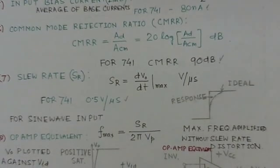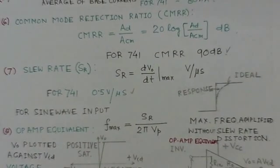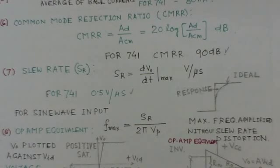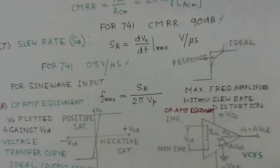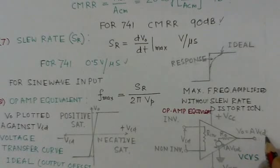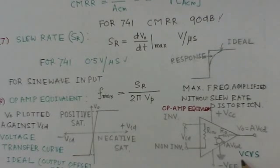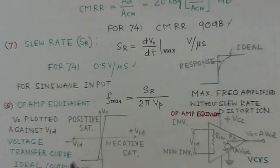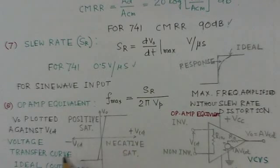The operational amplifier equivalent circuit shows the input impedance, the output resistance in series with a voltage source A × V_id, making it a voltage-controlled voltage source. The voltage transfer curve plots V_out against V_id; it is a linear region between the positive and negative saturation limits.